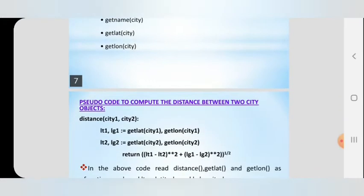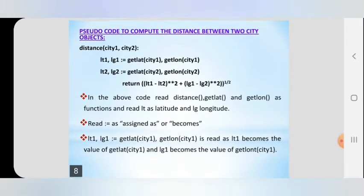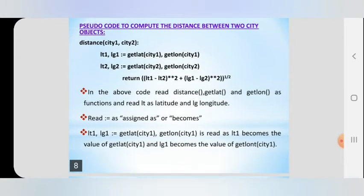Next we are going to discuss the pseudo code to compute the distance between two cities. The function is distance(city1, city2). We are going to find out the distance between city1 and city2. lt1 and lg1 are variables to store the latitude and longitude values, assigned using the selector functions.